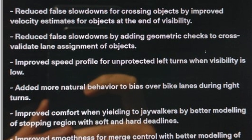Reduced false slowdowns for crossing objects by improved velocity estimates for objects at the end of visibility. When you see the FSD visualization, everything fades out at the sides and far ahead. What they're doing is improving velocity estimates for things far away, so as they enter the scene — either by you approaching them or them moving sideways — the car already has a better velocity estimate and doesn't have to do as much work as they get closer. Those objects are very small in pixels when far away, so this is really cool.